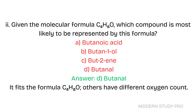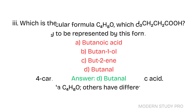Question 2: Given the molecular formula C4H8O, which compound is most likely to be represented by this formula? A. Butanoic acid. B. Butan-1-ol. C. Butene. D. Butanal. Answer: D. Butanal. With the formula C4H8O, the others have a different oxygen count.